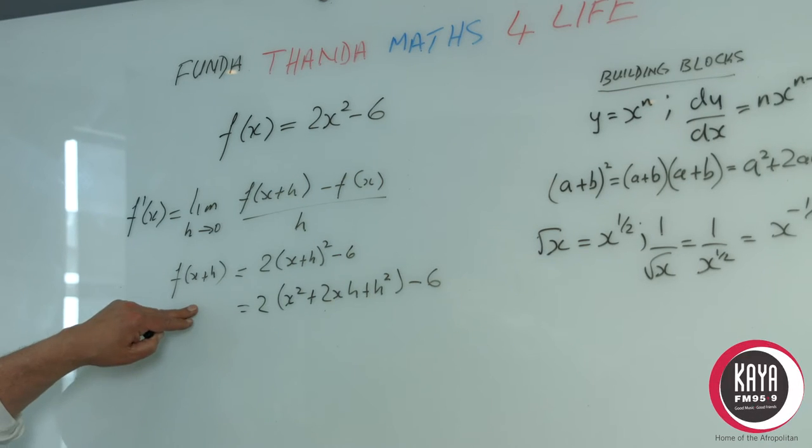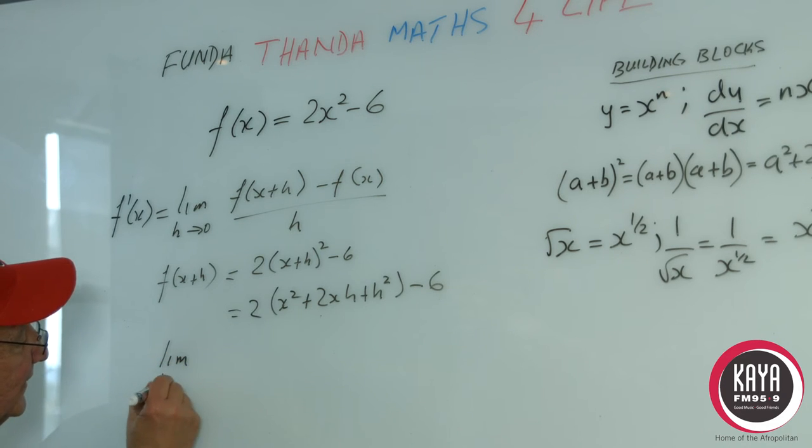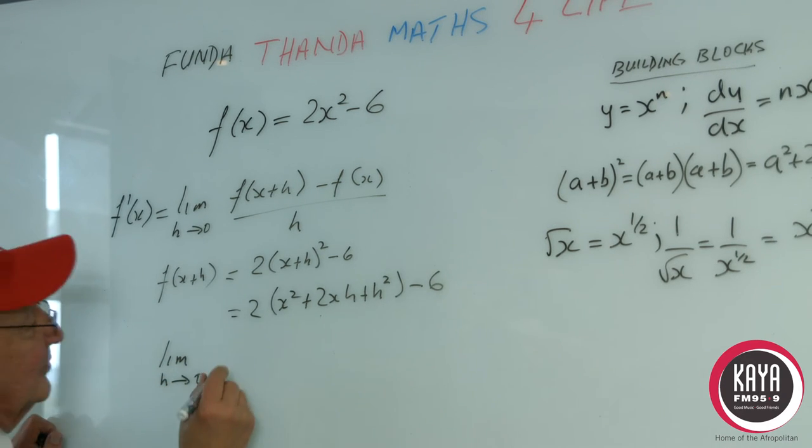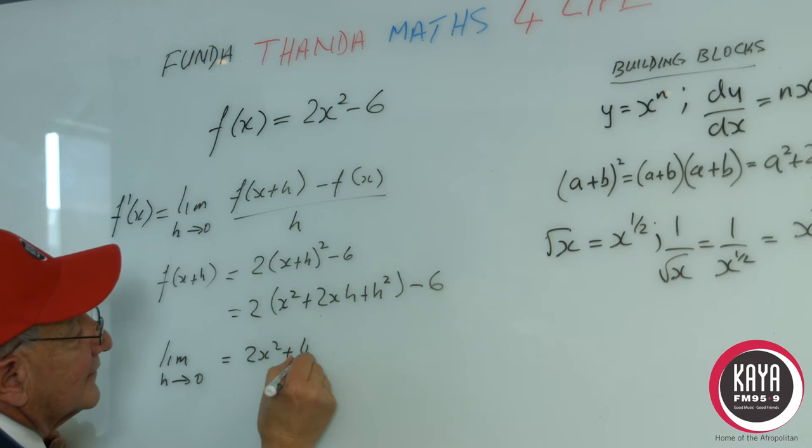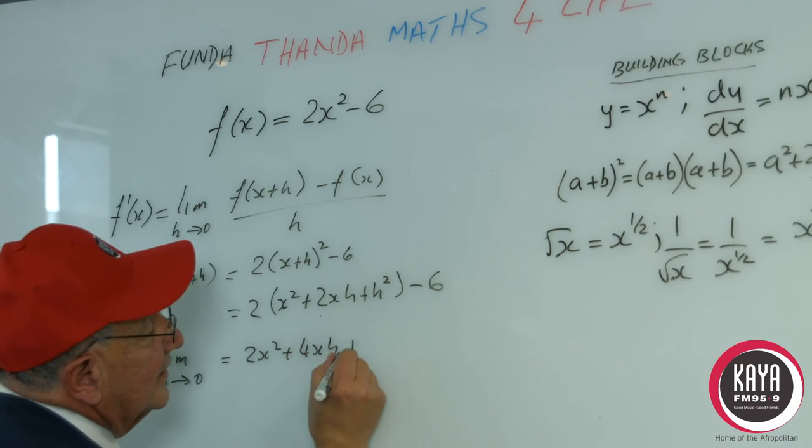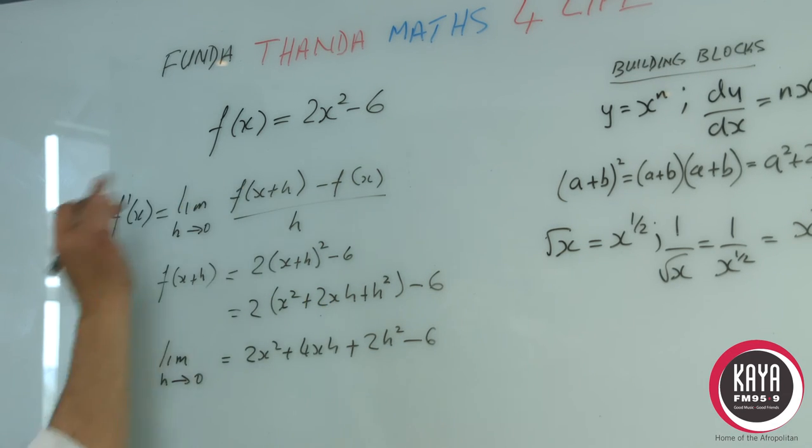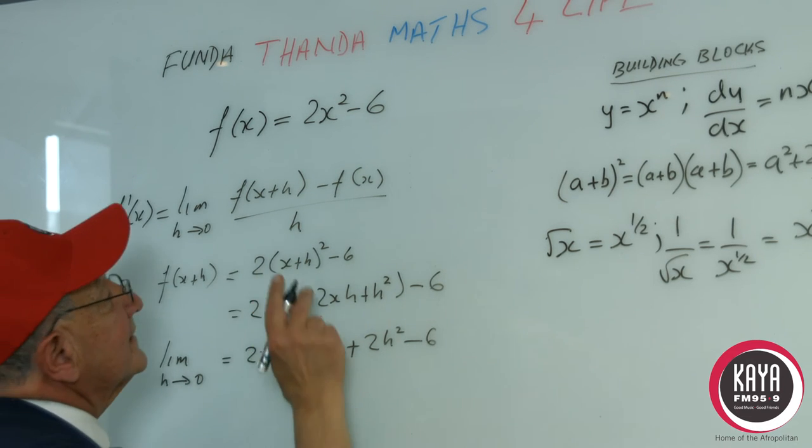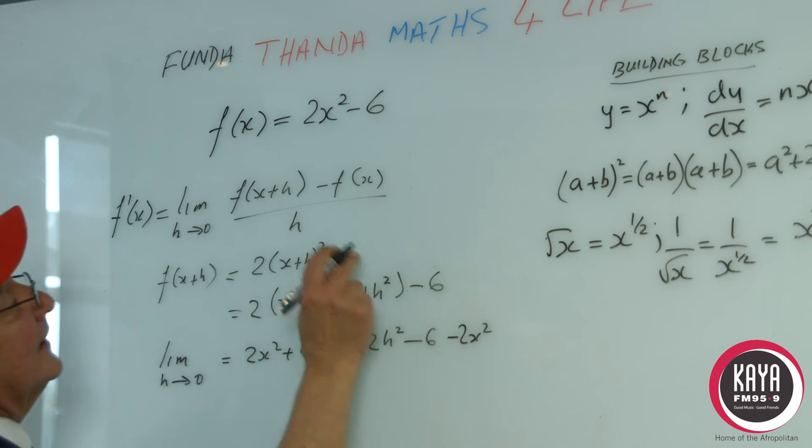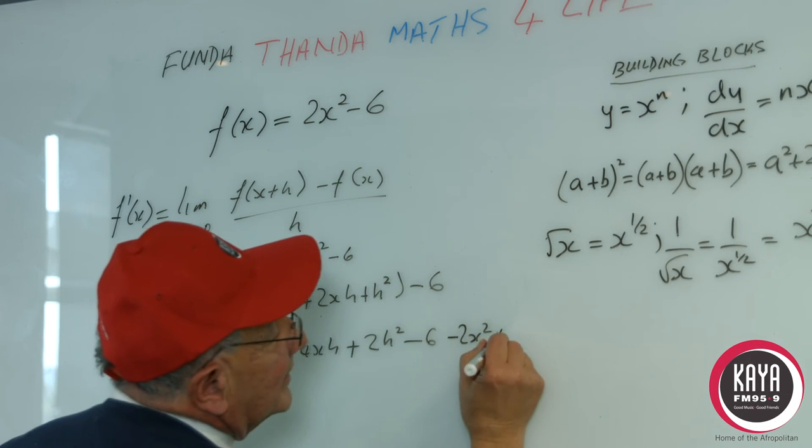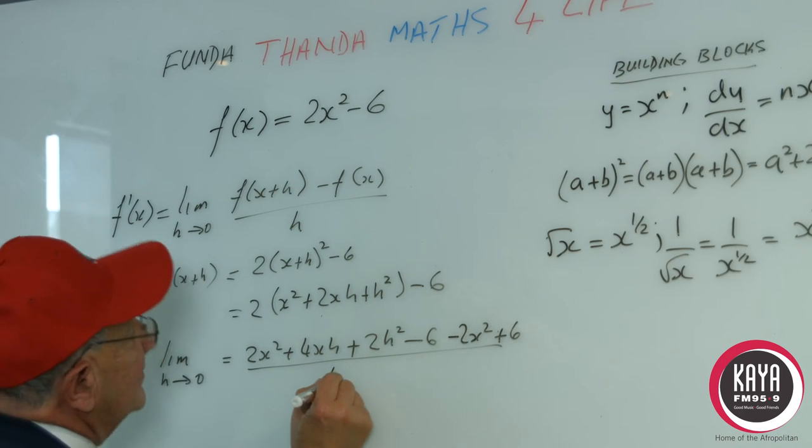So we have f(x + h) and we have f(x). So if we take our limit as h tends to 0 we are going to have 2x² + 4xh + 2h² - 6. We've substituted that into f(x + h). Now minus f(x) so that is going to be -2x² + 6. All this is divided by h.